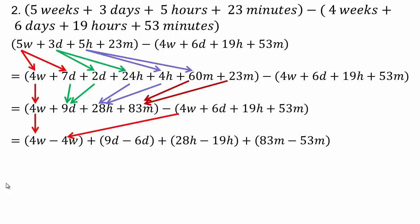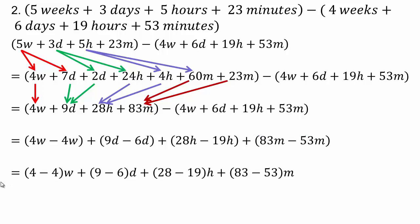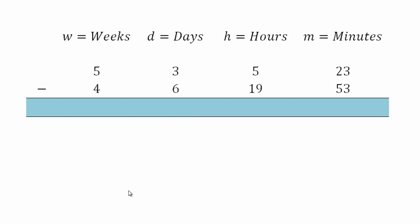Now performing the subtraction: 83 minus 53 = 30 minutes; 28 minus 19 = 9 hours; 9 minus 6 = 3 days; 4 minus 4 = 0 weeks. Final answer: 3 days, 9 hours, 30 minutes — or equivalently, 3 days and 9.5 hours.